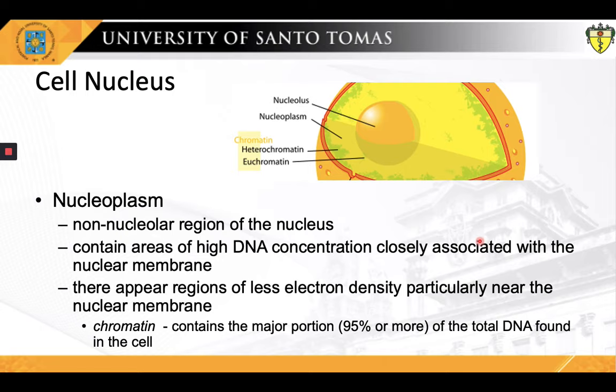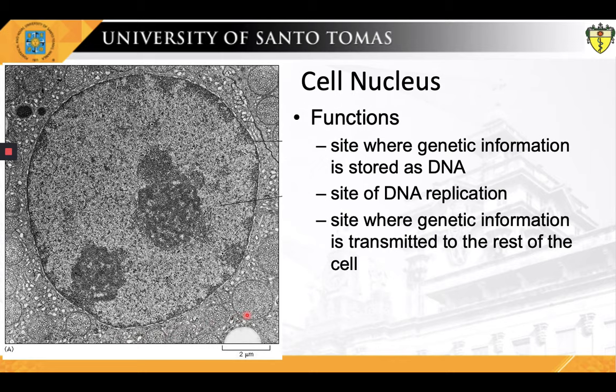The nucleolus is a very electron-dense suborganelle of the nucleus easily recognized under the light microscope. It is the site within the nucleus where ribosomal RNA biosynthesis occurs. The nuclear organizer, a region of one or more chromosomes in the nucleolus, contains many copies of the DNA that direct the synthesis of ribosomal RNA. The nucleolus is roughly spherical and is surrounded by a layer of condensed chromatin. No membrane separates the nucleolus from the nucleoplasm. Throughout the nucleoplasm, there appear regions of chromatin, which are known to contain 95% or more of the total DNA found in the cell. The nucleus is the site where genetic information is stored as DNA, the site of DNA replication ensuring the perpetuation of the cell line, and the site from which genetic information is transmitted to the rest of the cell.